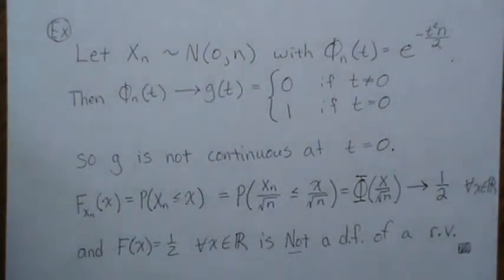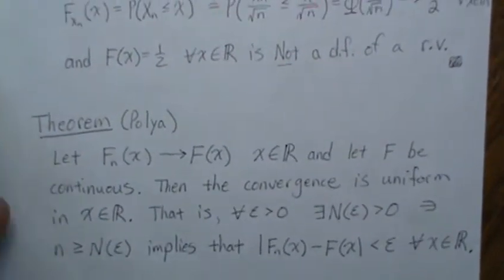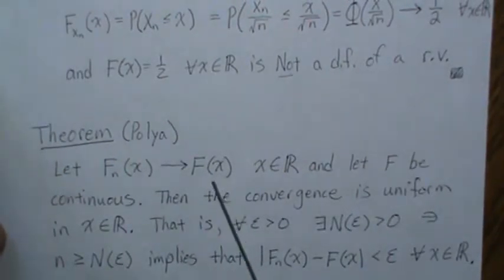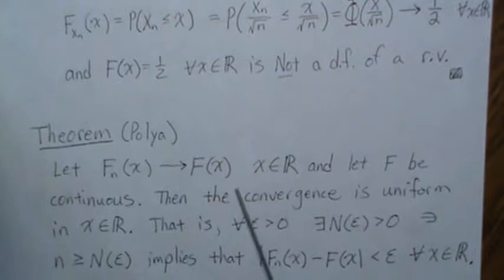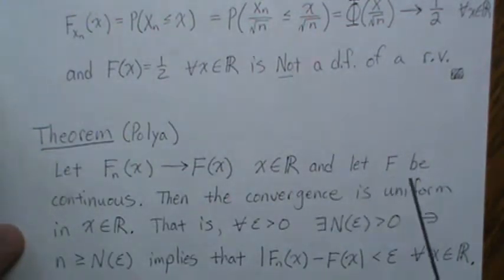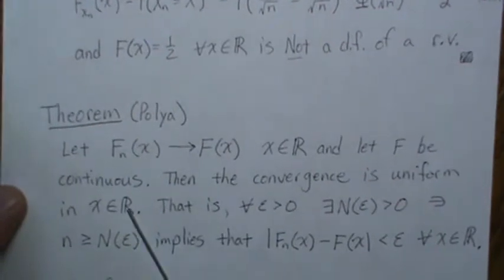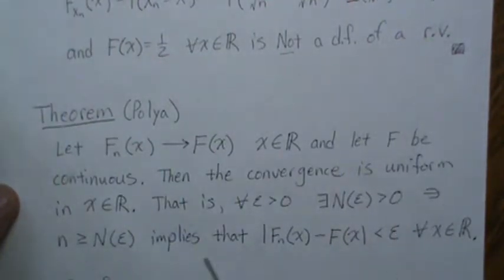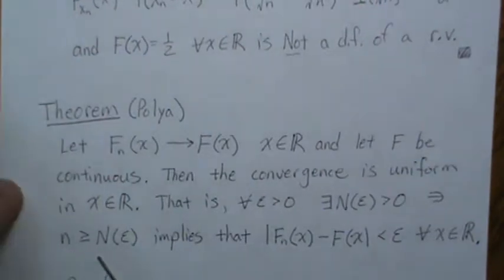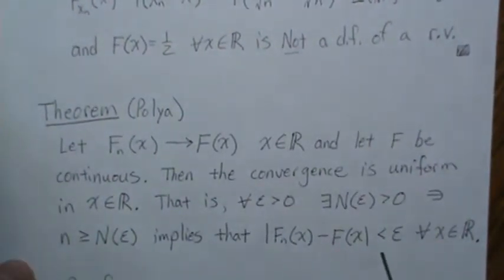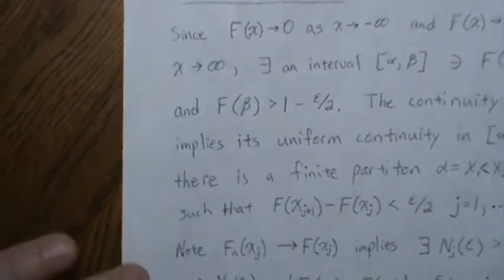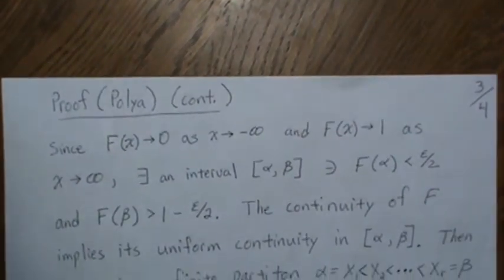Now to prove that Fn converges uniformly: let the sequence converge to F for all x in ℝ and let F be continuous. Then the convergence is uniform in x — that is, for any ε greater than zero there exists N, which may depend on ε, such that if n is greater than N, then the difference |Fn(x) - F(x)| is very small for all x. Let's go through the proof.